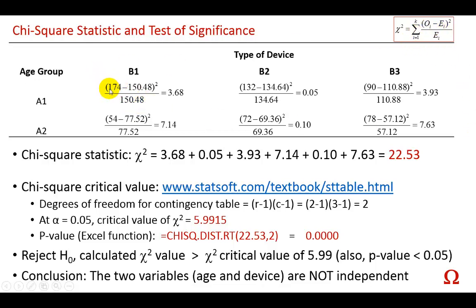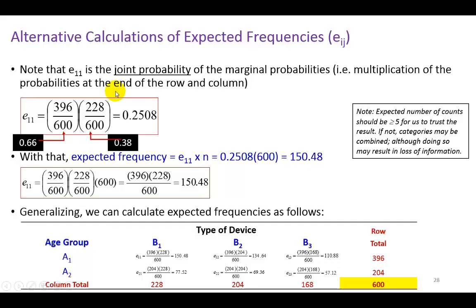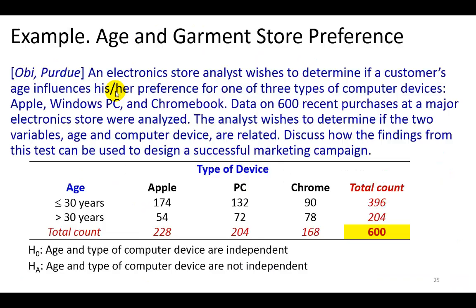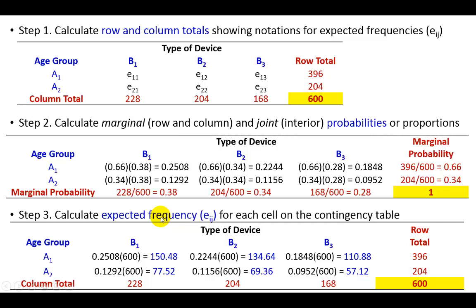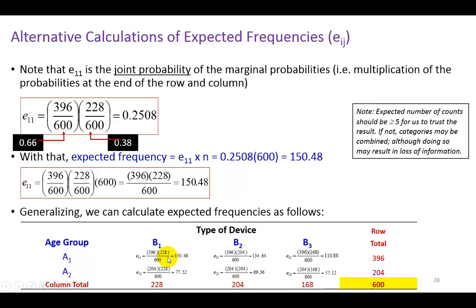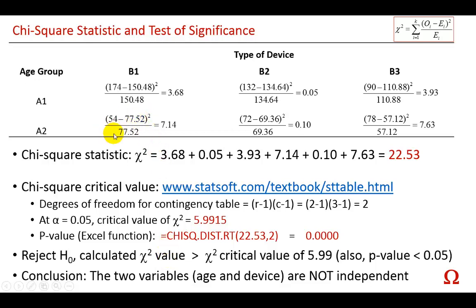Again, this 174 is the number we observed from the survey. And if I go back real quick, I remind you that that's it over here. So, this second one is going to be 54 minus the expected frequency of 77.52 squared. That's it right here. And then we divide by the expected frequency of 77.52. So, that's how we're going to do it for each of these cells. And then we sum them all up. And the total number, which is the calculated chi-square statistic, is 22.53. We're done.